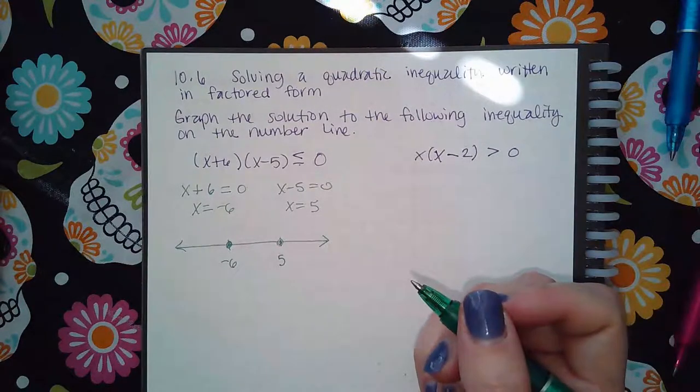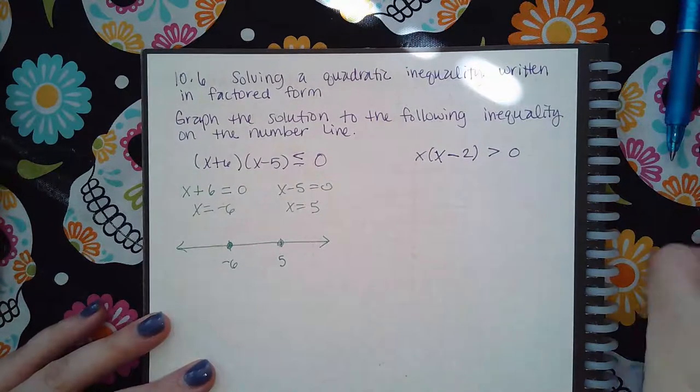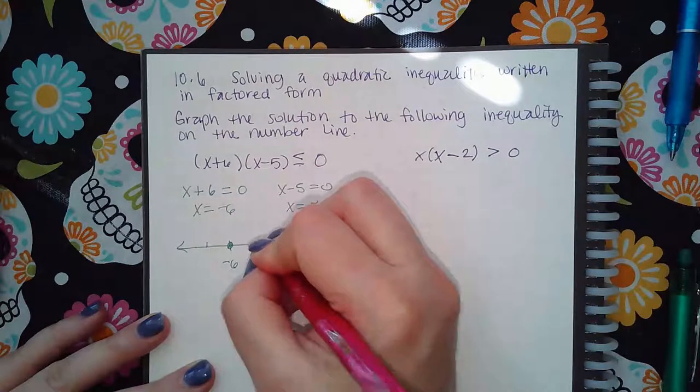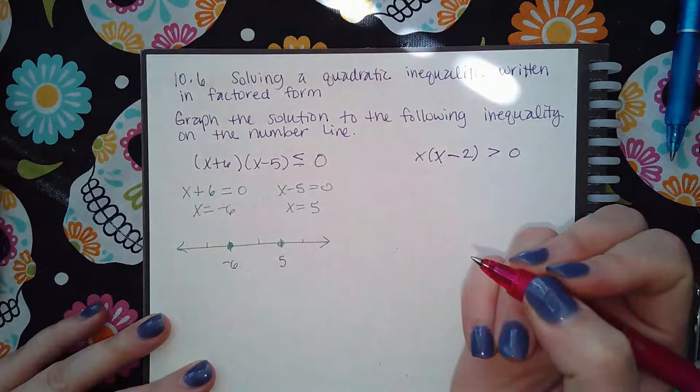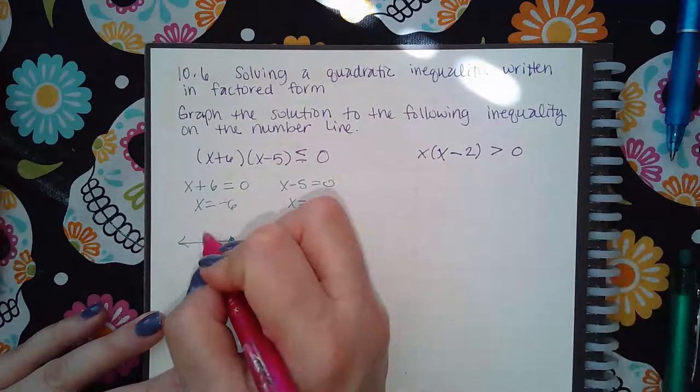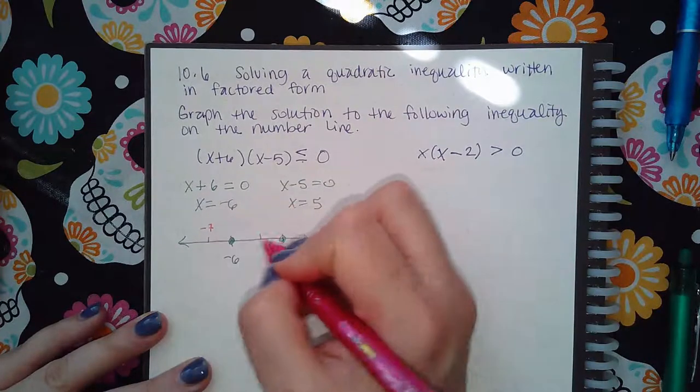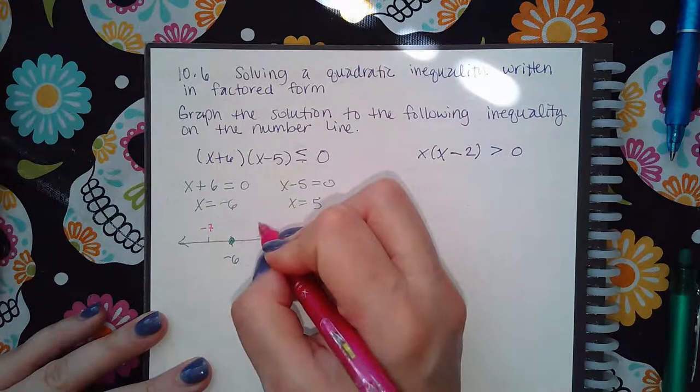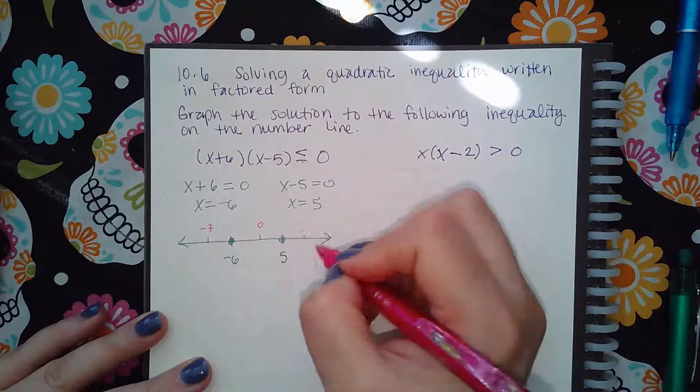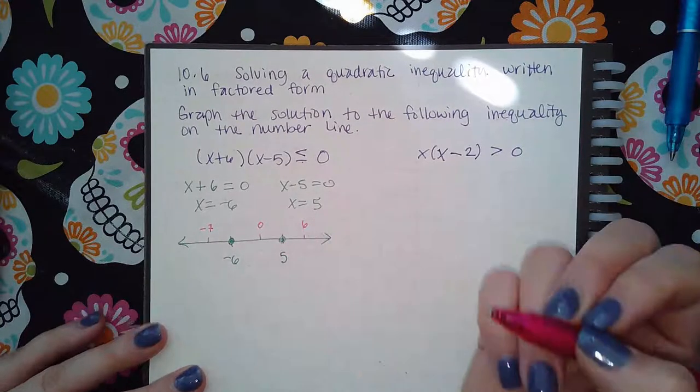But what I need to find out is I need to test a value in each interval to see if it works or not in that particular interval. So over here, I'm going to try negative seven. In between negative six and positive five, I'm going to try zero. And to the right of positive five, I'm going to try six.